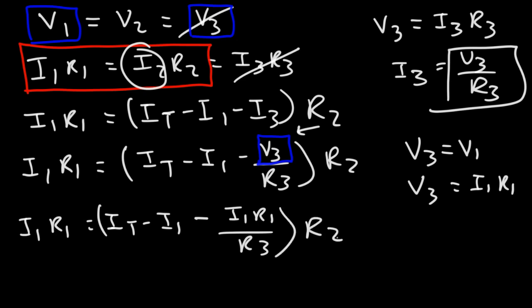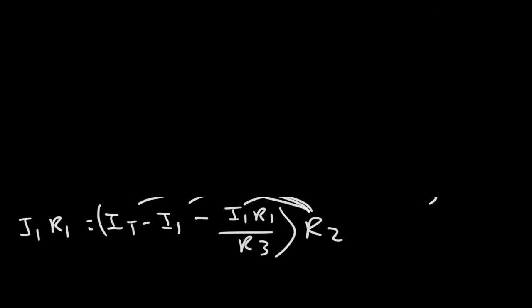So this is what we now have. Our next step is to distribute R2 to everything that we see here inside the parentheses. So we're going to have I1 R1, that's equal to the total current IT times R2, and then minus I1 R2 minus I1 R1 R2 over R3.